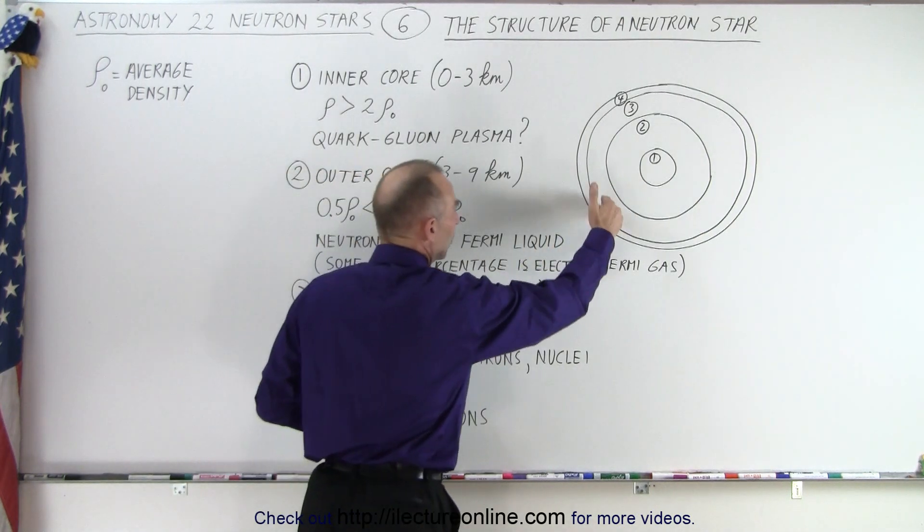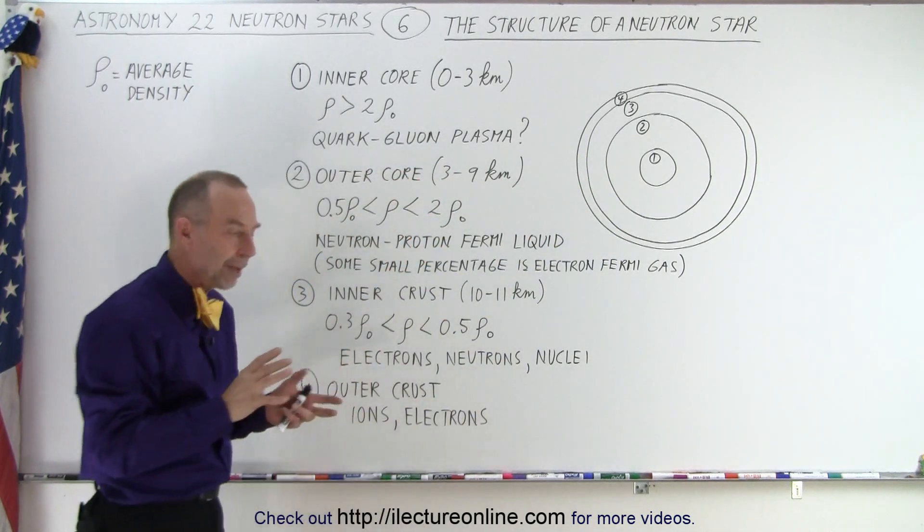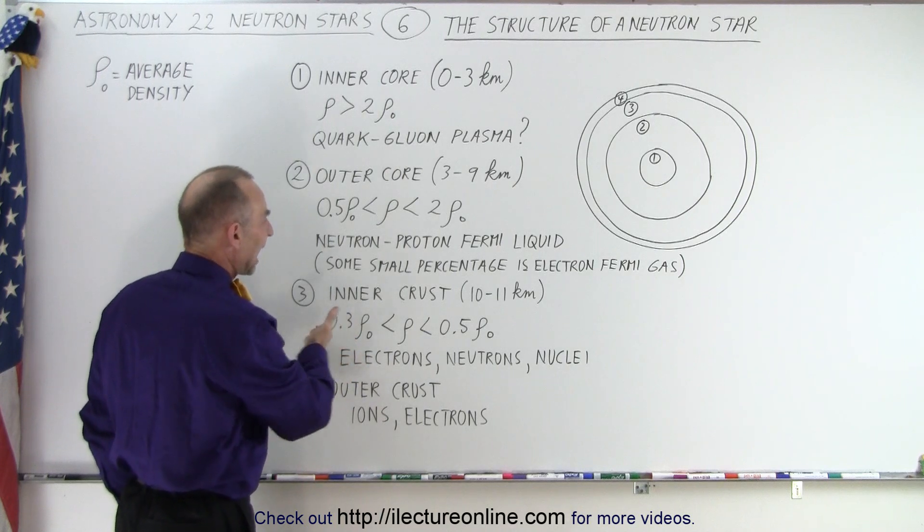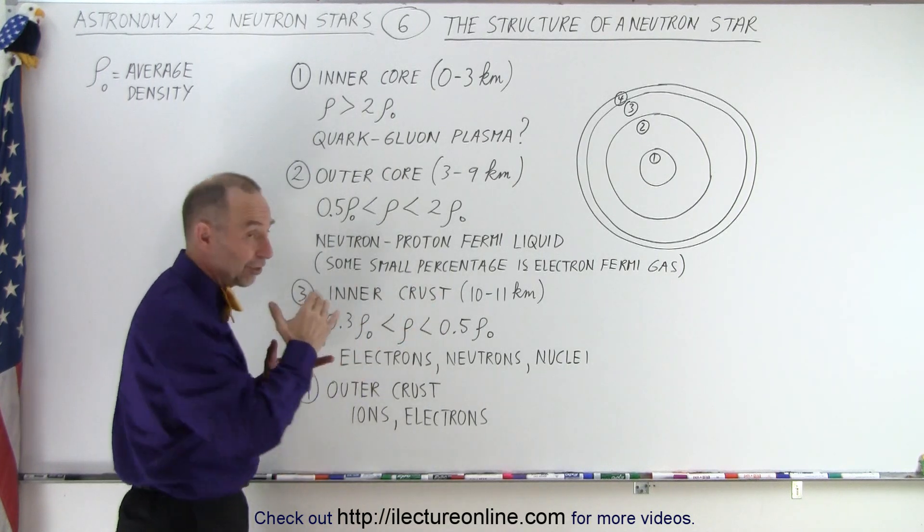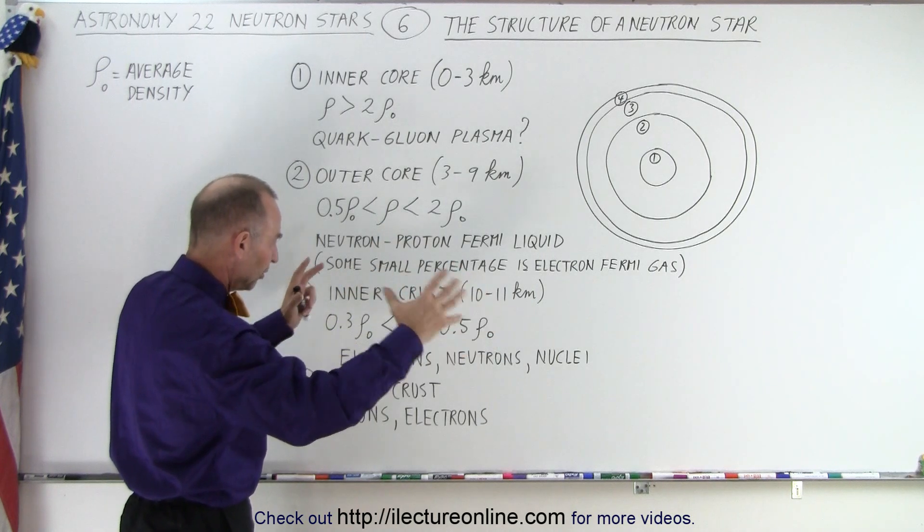Then if you go beyond that, we get to what we'd call the inner crust, which is about one to two kilometers thick. There the density is far less than the average density of the neutron star. So you can see that there's really a big difference between the density of the edge of the neutron star versus the center.